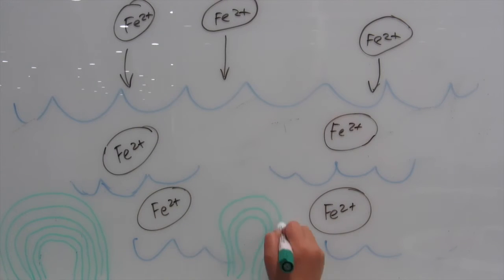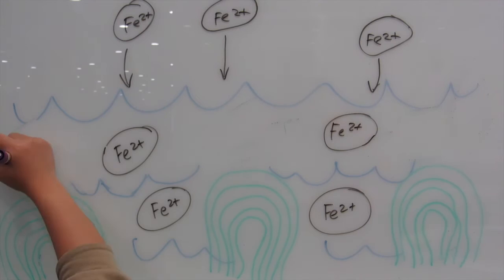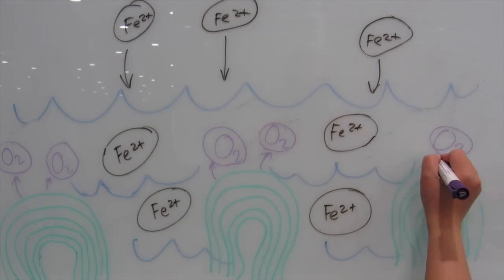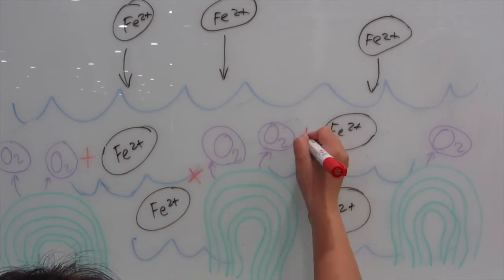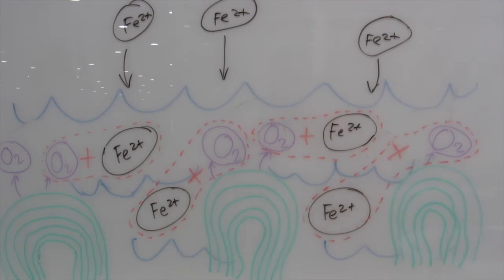Blue-green algae named cyanobacteria formed structures called stromatolites. These photosynthesized and created an abundance of oxygen in the ocean as a waste product. The iron combines with oxygen to create hematite and magnetite.